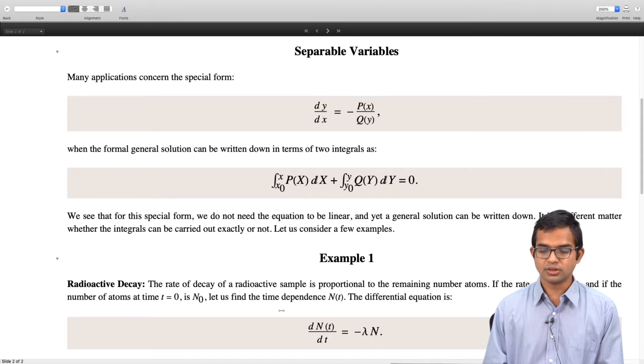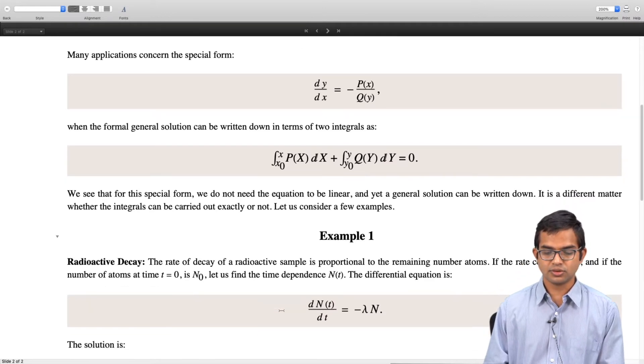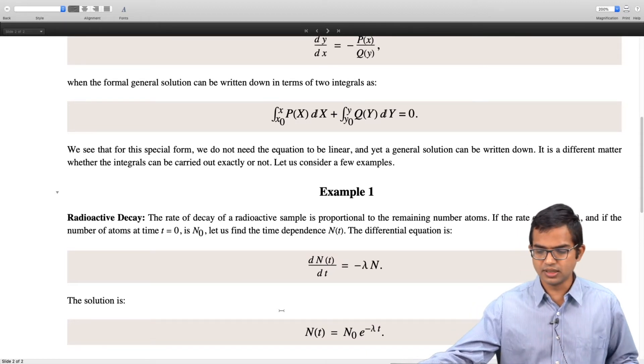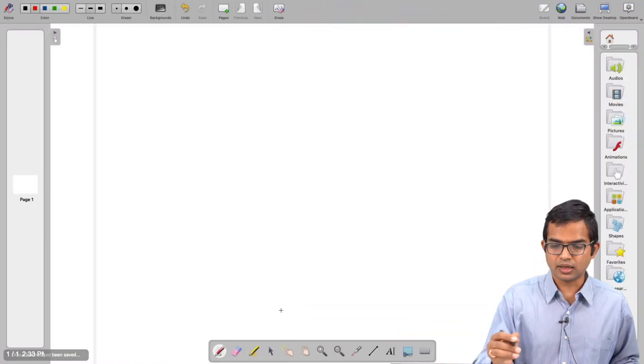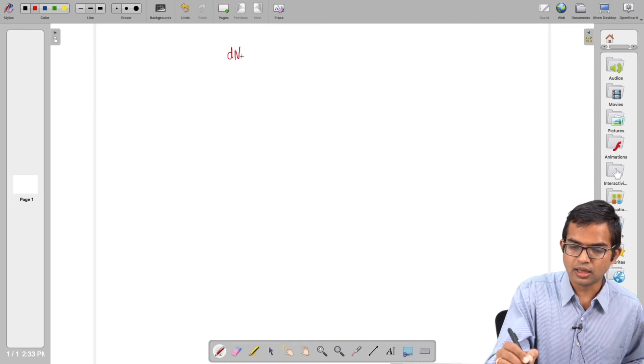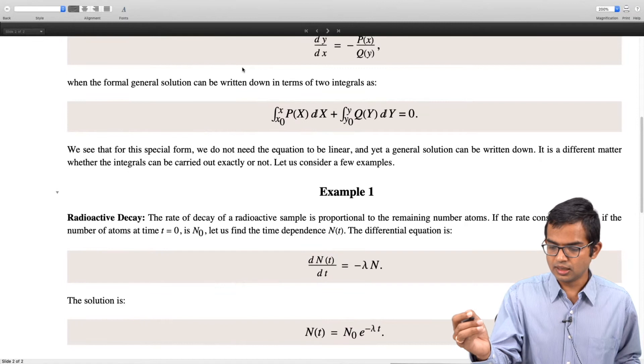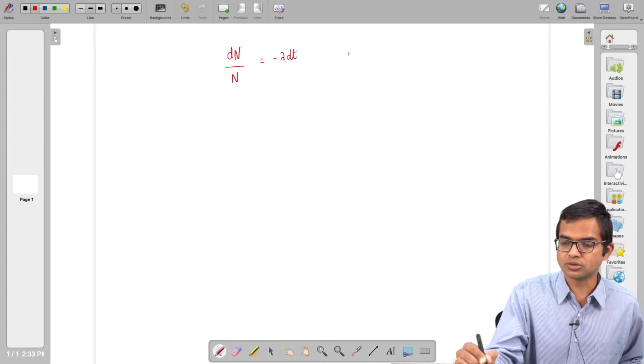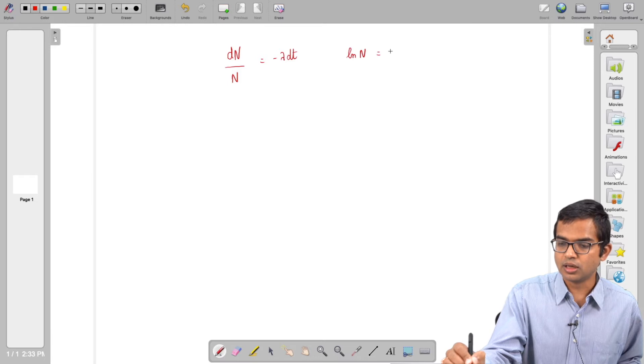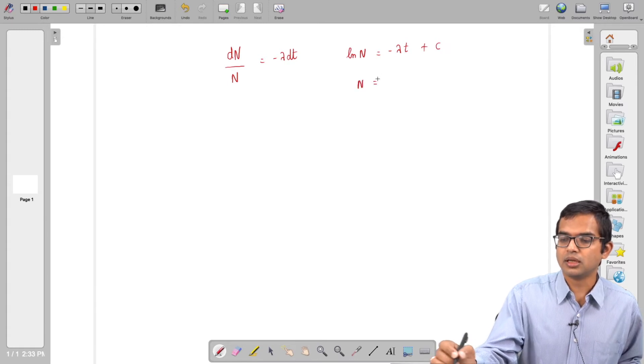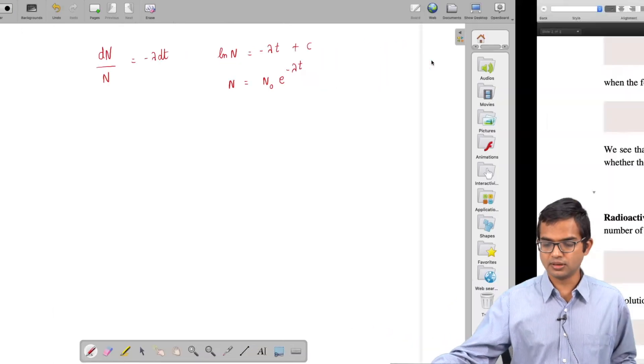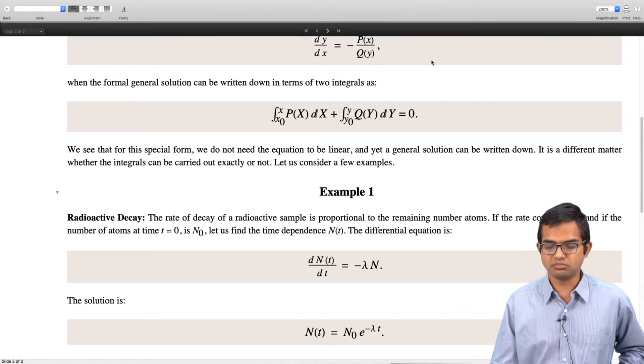The solution is straightforward. It is of the separable form, so we can write dN/N = -λdt. Integrate both sides, so you get log N = -λt + C. Therefore, N = N₀e^(-λt). This is a very familiar differential equation that most of us must have seen.